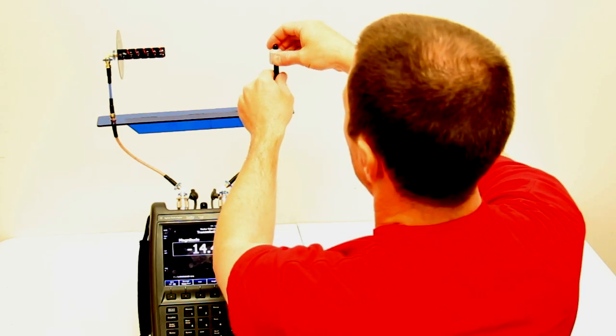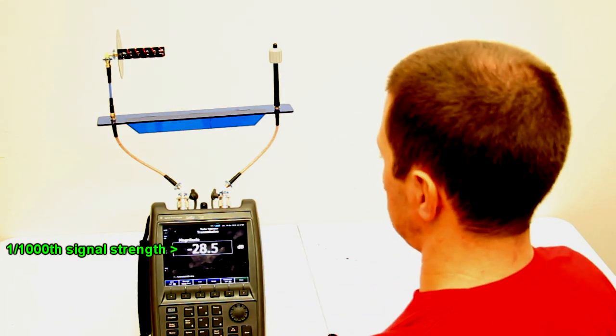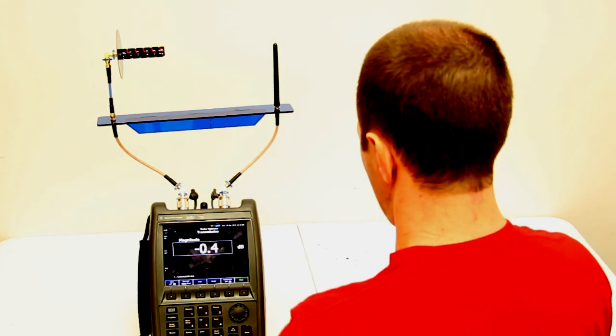However, when you place a left-handed cap over that stock whip, you can see the rejection is so high that the tester has a hard time taking a reading.